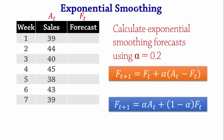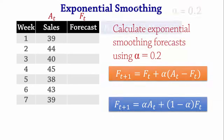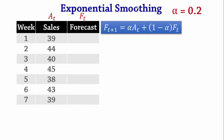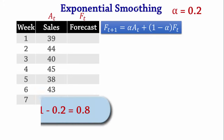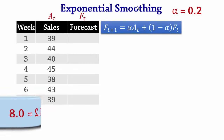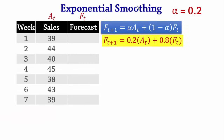Our first objective is to calculate exponential smoothing forecasts using alpha = 0.2. Since alpha = 0.2, then 1 − alpha = 0.8. The formula becomes 0.2 times the actual values plus 0.8 times the forecast values.